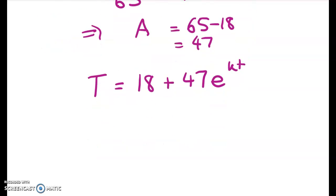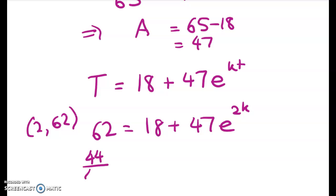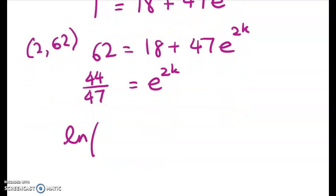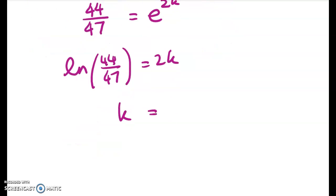And now we're going to substitute in that the coffee is 62 degrees after two minutes. So 62 is equal to 18 plus 47 times e to the power of 2k. That gives me 44 over 47 is equal to e to the 2k. We take logs of both sides. Solving that gives me k is equal to a half of this, and that gave me a value of negative 0.03298.